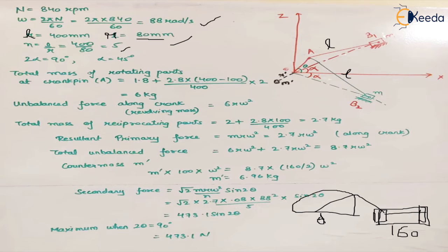The angle between both cylinders is 90 degrees. We consider that each cylinder makes an angle α with the x-axis, so 2α = 90 degrees, giving α = 45 degrees.